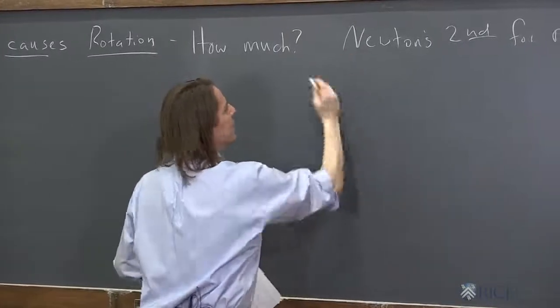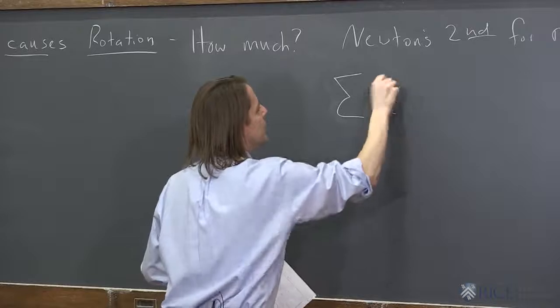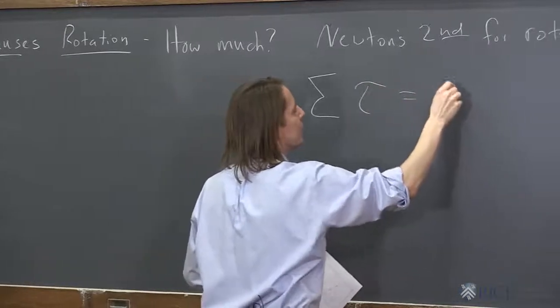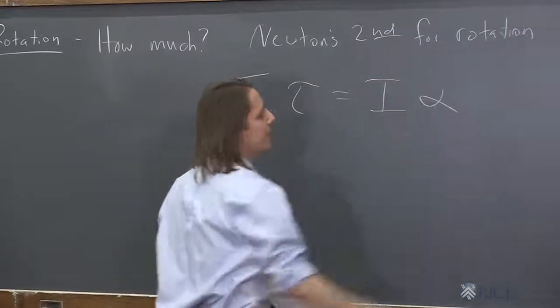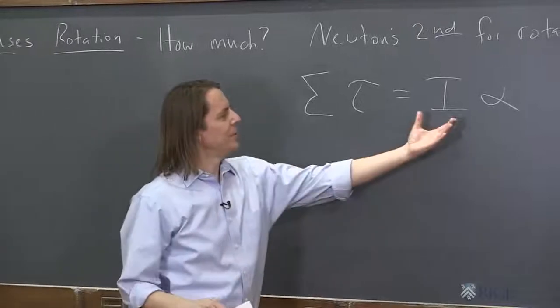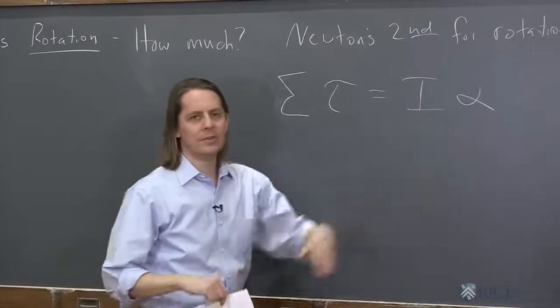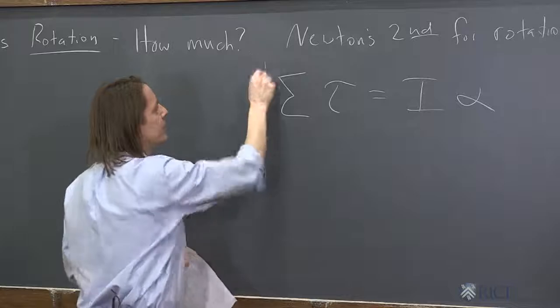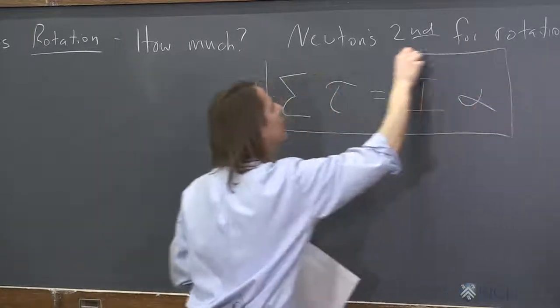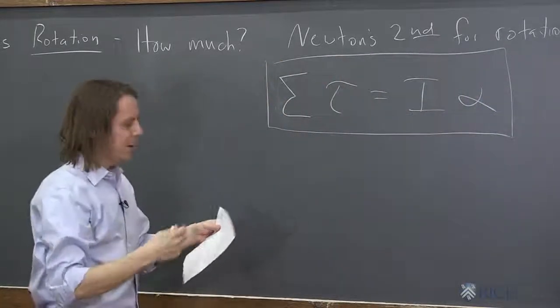And it looks like this. If you have an object and you say the sum of all the torques applied equals I alpha. This is the moment of inertia we've been talking about and this is the angular acceleration. So this is the basic equation you always go to when you're figuring out a kinematics problem.